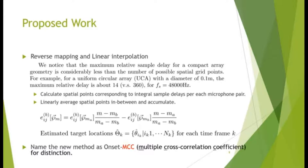To improve the efficiency, reverse mapping and linear interpolation is used. We can see that the maximum relative sample delay for compact array geometry is considerably less than the number of possible spatial grid points. For example, for a uniform circular array with a diameter of 0.1 meters, the maximum relative delay is about 14 samples for a sampling rate of 48 kHz.